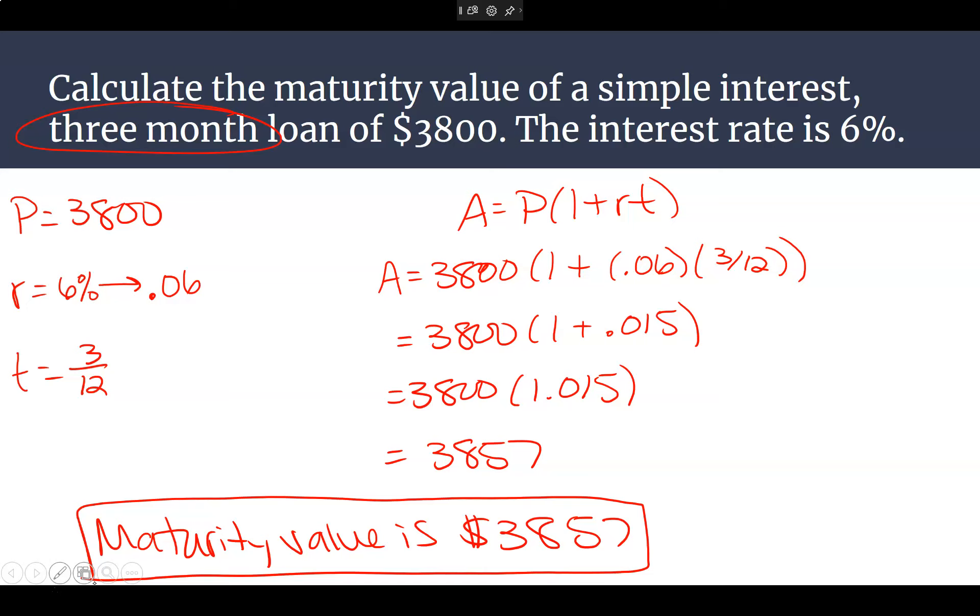Bonus question. How much interest was earned in that 3 months? $57. Nice. Another bonus question. Did you borrow money or are you gaining money? If it's a maturity value. We borrowed money. Yep. This is for a loan. So, we borrowed 3,800, but in 3 months, I'm going to owe them 3,857.